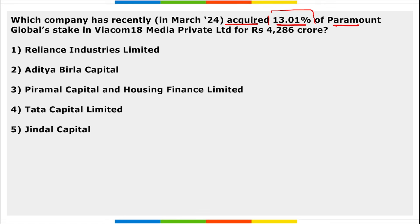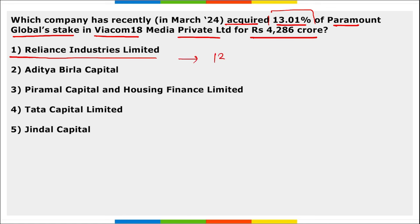Reliance Industries Limited recently acquired 13.01% of Paramount Global's stake in Viacom18 Media Private Limited for ₹4,286 crore. This acquisition increased Reliance Industries' stake in Viacom18 to 70.49%.